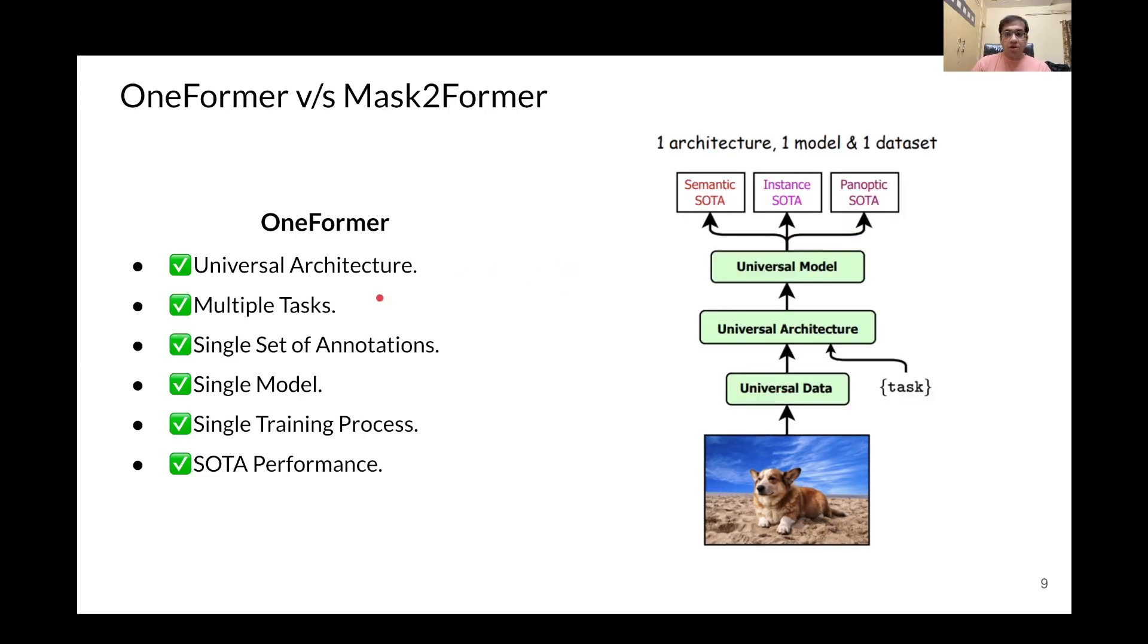OneFormer is able to overcome the drawbacks of Mask2Former with its ability to tackle multiple tasks with a single model and a single training process and also achieve state-of-the-art performance on each of the three image segmentation tasks.